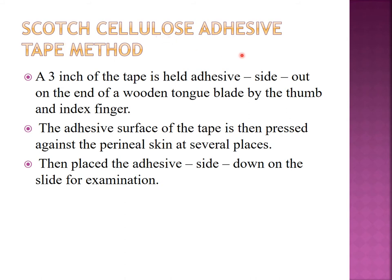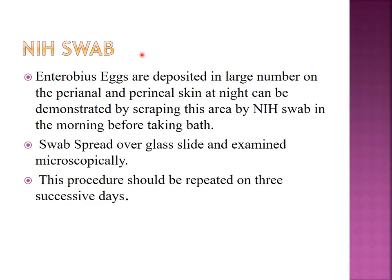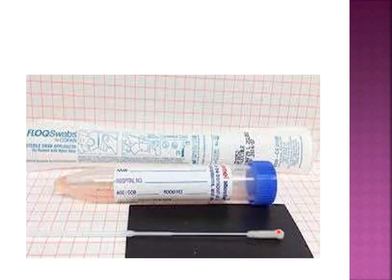Another method is the scotch cellulose adhesive tape method. Three inches of tape is held adhesive side out over a wooden blade, then the adhesive surface is pressed against the perianal skin, and the tape is placed on a slide for examination. This collects perianal eggs deposited there, which can then be examined under the microscope. An NIH swab can also be helpful for Enterobius eggs, as they are deposited at perianal skin at night, and microscopy can be done from the swab.